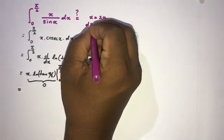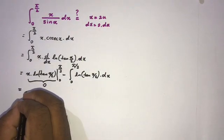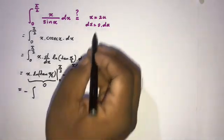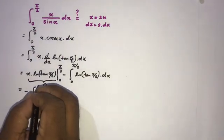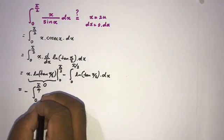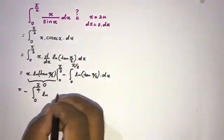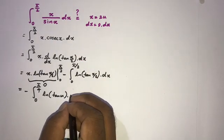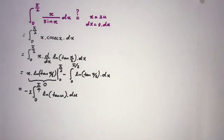Differentiating gives dx = 2 du. Changing the limits: when x → 0, u → 0; when x → π/2, u → π/4. So the integral becomes minus the integral from 0 to π/4 of natural log of tan(u) times 2 du, with the factor of 2 written outside the integral sign.